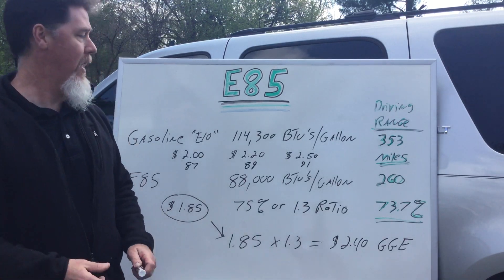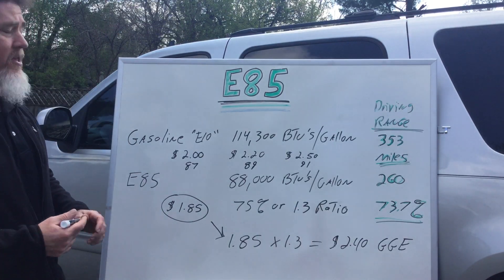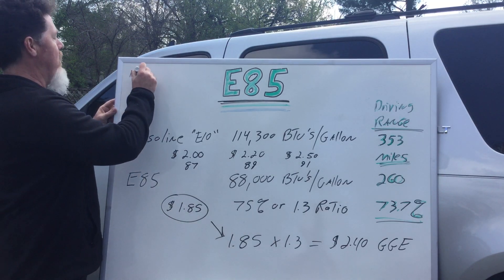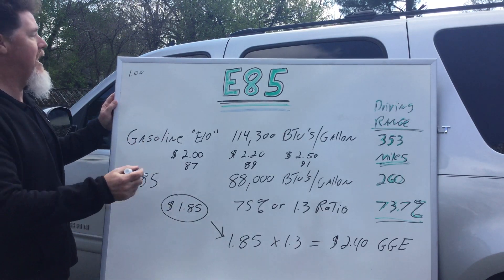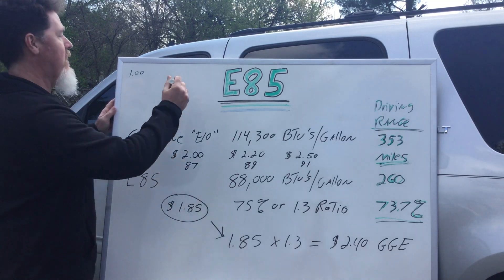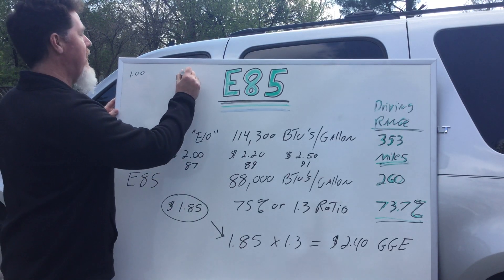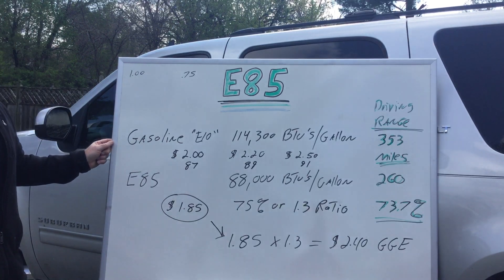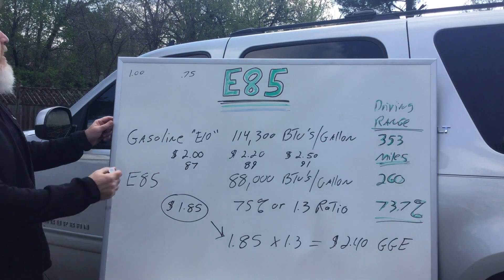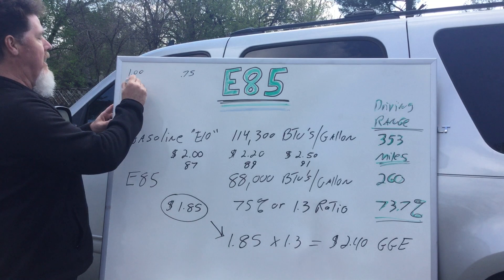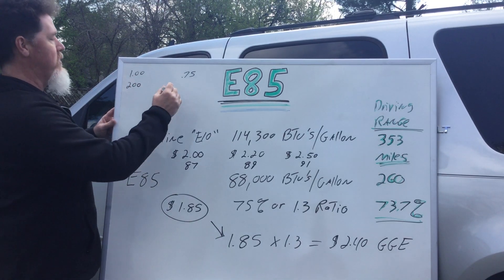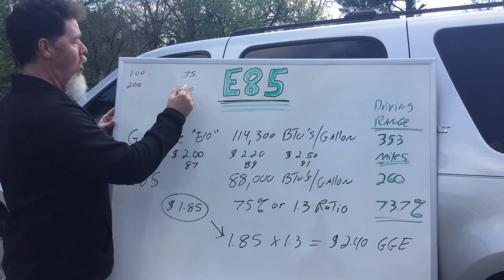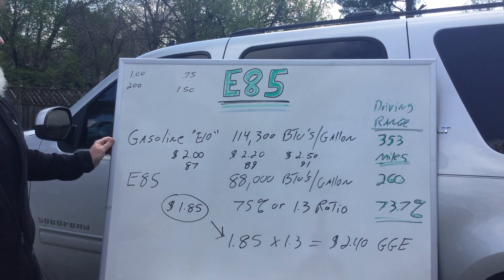What you can do is some quick math: the ratio is 75%, so you know that if gasoline is $1.00 a gallon, E85 would need to be 75 cents or lower to be a good deal. If gasoline is $2.00 a gallon, then E85 would have to be $1.50 or less in order to be a good deal.